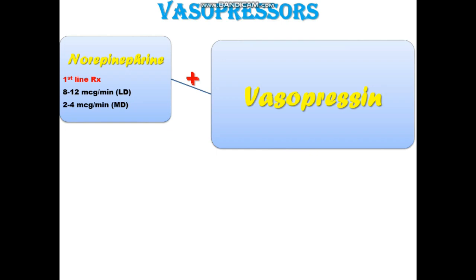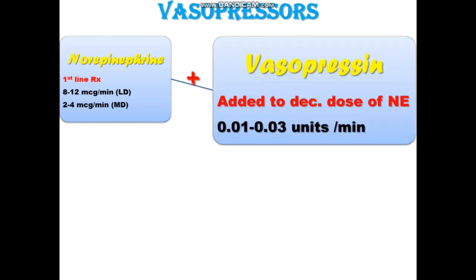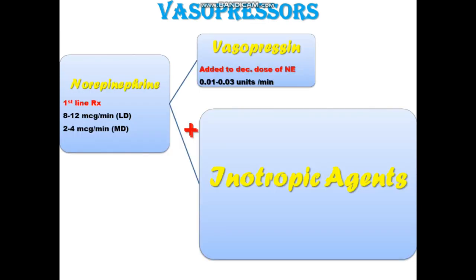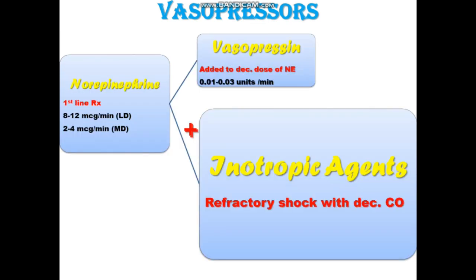After norepinephrine, we can add vasopressin. The purpose of adding vasopressin is to decrease the dose of norepinephrine. The dose of vasopressin is 0.01 to 0.03 units per minute. If the patient with septic shock has decreased cardiac output, we can use inotropic drugs.